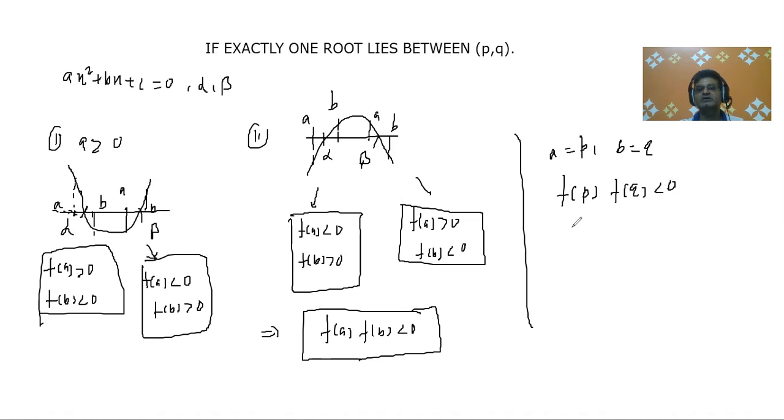Now second condition, that of course roots must be real and distinct. The roots must be real and distinct, then one root lying between is possible. So exactly for exactly one root to lie, these are the two conditions. First condition is D > 0, which means discriminant must be greater than zero.